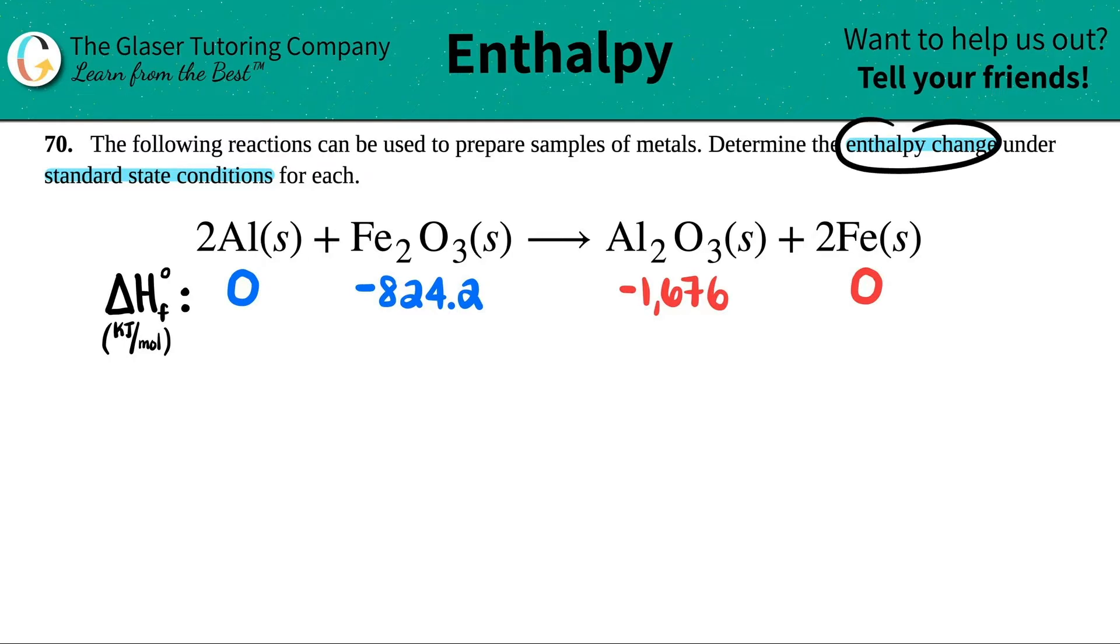Now they want us to find the enthalpy change. Remember, enthalpy is delta H. So we have to find the delta H for this whole equation. And they want it under standard state conditions. This is a disguise for saying get the values in the back of a textbook. So there's going to be an appendix in the back of a textbook that has the delta H values for each component.